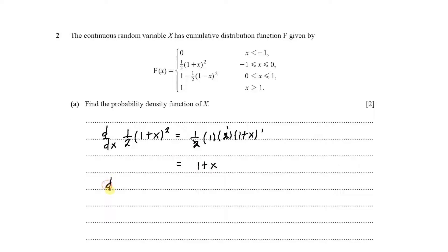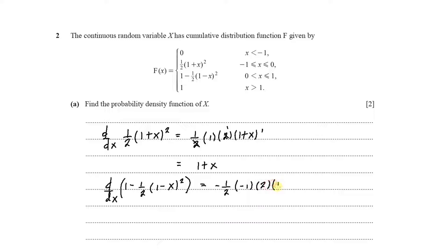I'm also going to differentiate with respect to x the other function, which is 1 minus one half of (1 minus x) squared. This gives us: differentiating 1 is a constant so we get 0, then minus one half; differentiating (1 minus x) gives minus 1, I bring down the 2, and (1 minus x) to the power of 2 minus 1 is just 1. So the 2s cancel, leaving minus of minus 1, which is 1, times (1 minus x). So we just get 1 minus x.